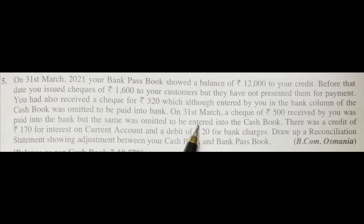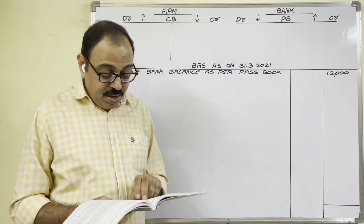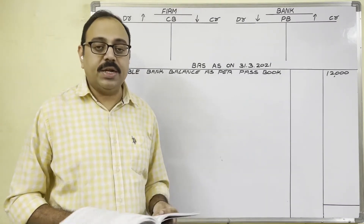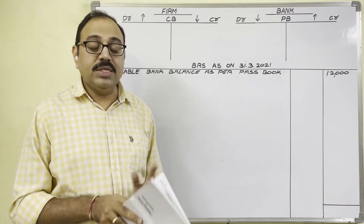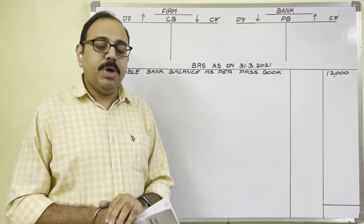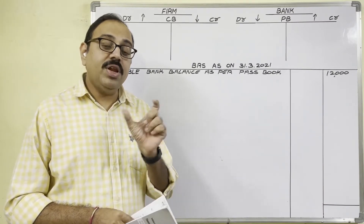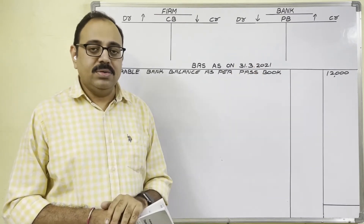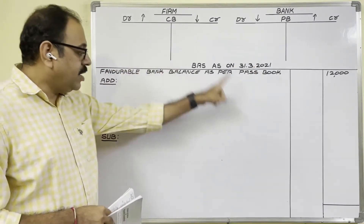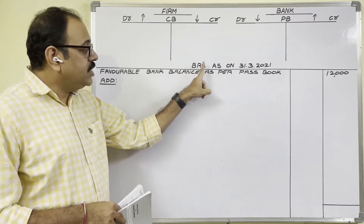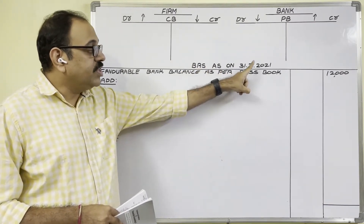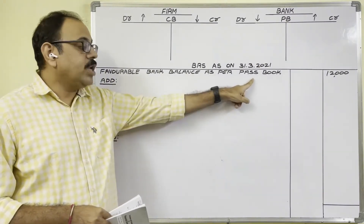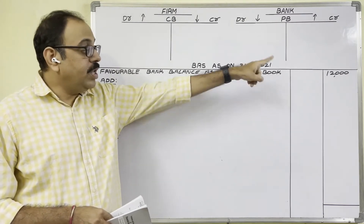Let us see the solution. On 31st March 2021, your bank passbook showed a balance of 12,000 rupees to your credit. This means as per passbook there is a credit balance of 12,000. As per passbook, a credit balance means a favorable bank balance — our firm has money in the bank. This is the Bank Reconciliation Statement as on 31st March 2021. The favorable bank balance as per passbook is given; write down that amount in the outer column.